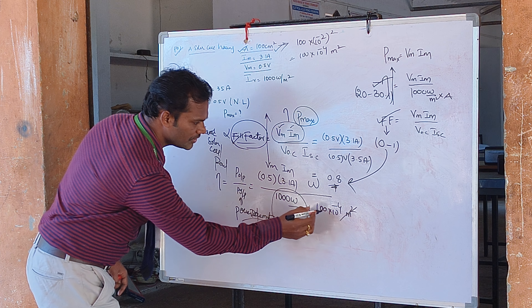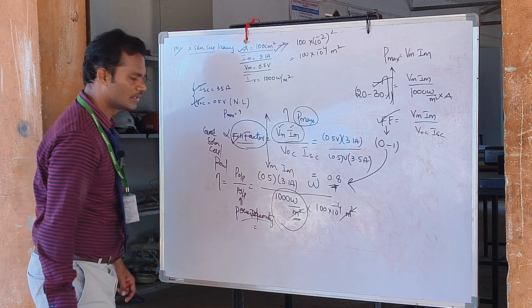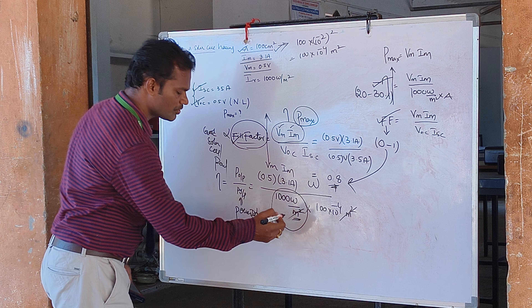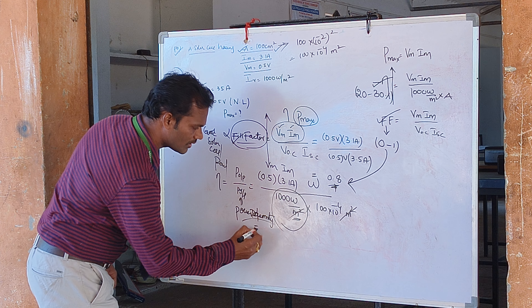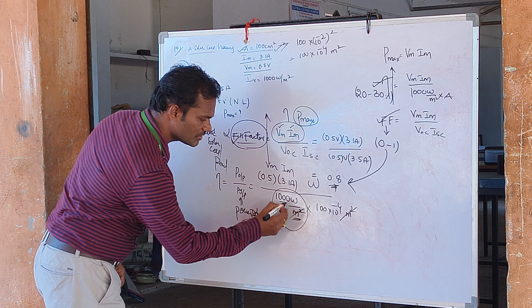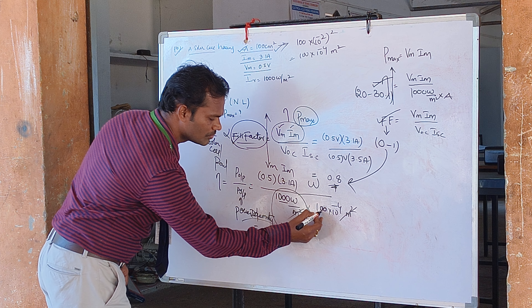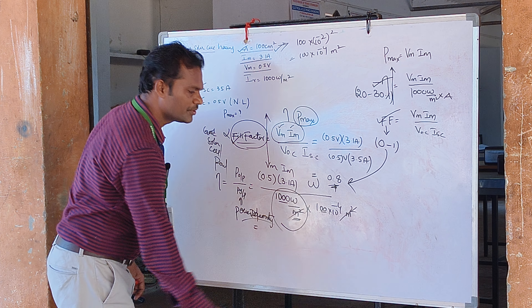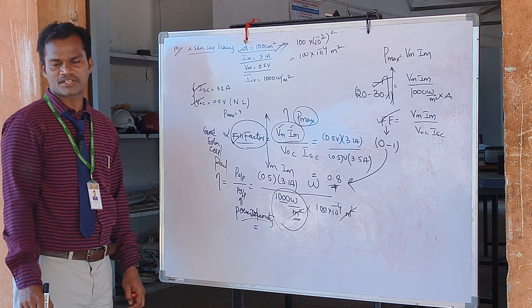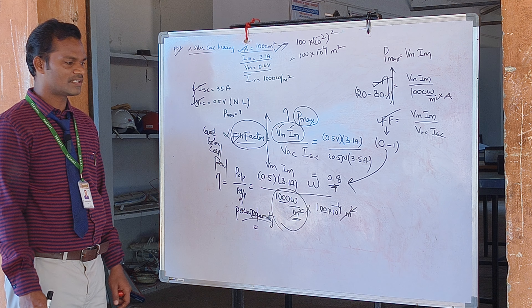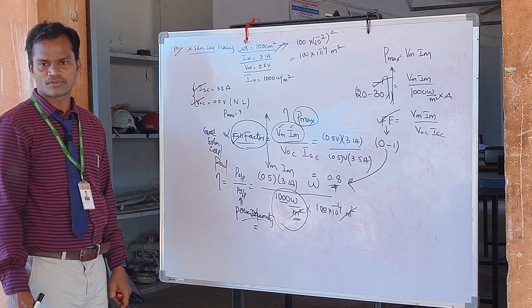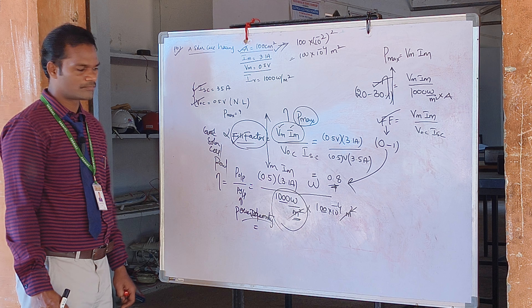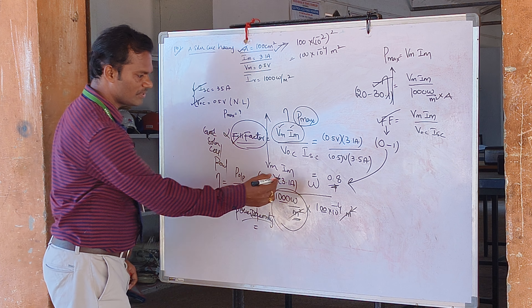Calculating the denominator: 1000 watts per meter square multiplied by 100 × 10⁻⁴ gives 10⁻¹. So multiply this value out to get the final efficiency.